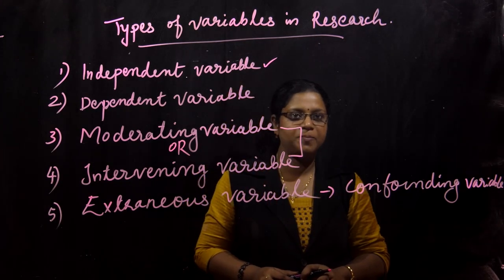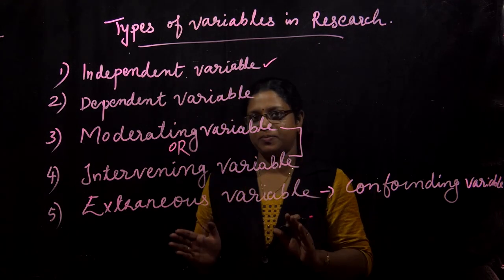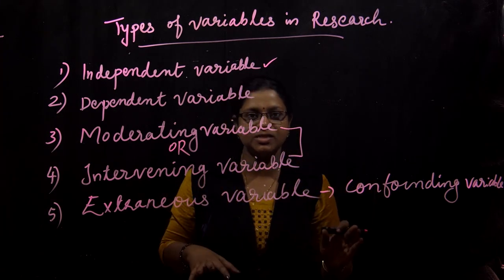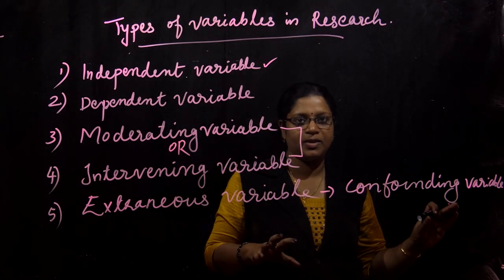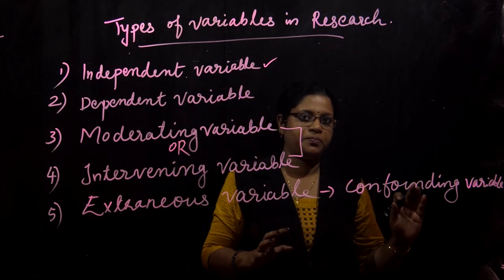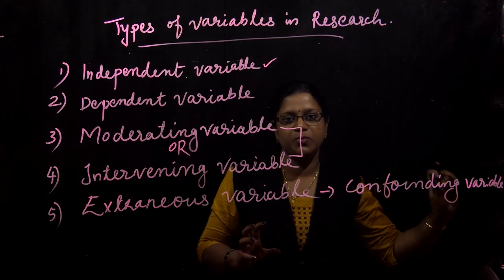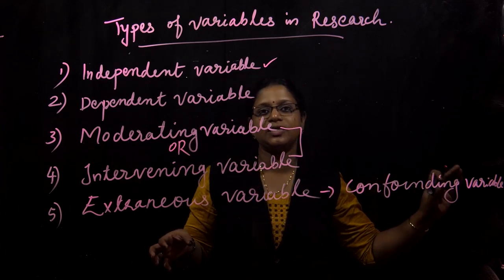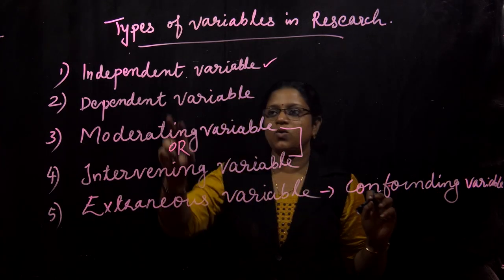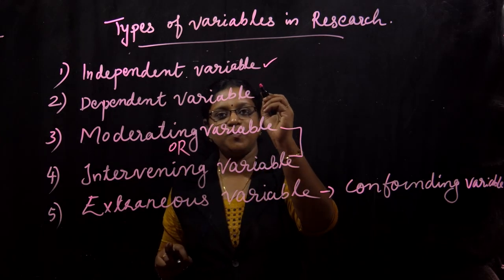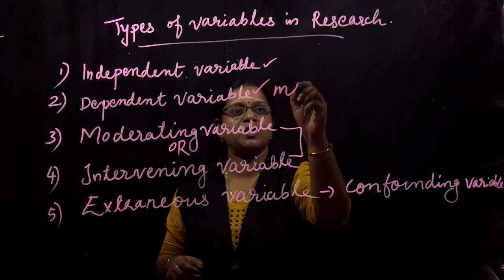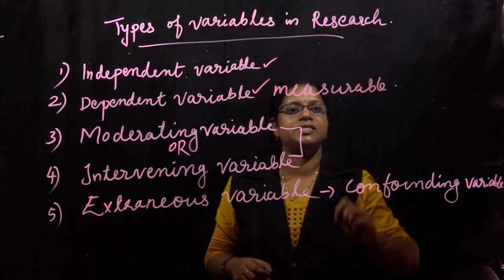A variable means a quantity or quality that varies. It may change from person to person, group to group, or within a person over time. For example, eating ice cream leads to fever — ice cream is the independent variable and fever is the dependent variable. The cause is the independent variable, also known as the manipulated variable. The effect on the other variable is the dependent variable, which is measurable and can be measured using different statistical tools.